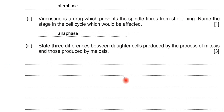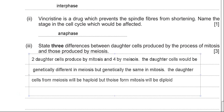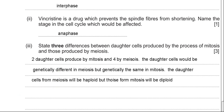Lastly, you're asked about three differences between daughter cells produced by mitosis and those produced by meiosis. First, the number of cells: mitosis produces two and meiosis produces four daughter cells. Second, mitosis produces genetically identical daughter cells. Third, the chromosome number: in mitosis there will be a diploid number — a full set of chromosomes — but in meiosis that is halved, which is called the haploid number. That's the end of this question.